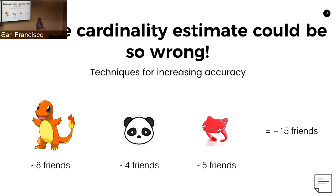Another possibility is to split them up and have different sets of friends play different vending machines, then average out the probabilities. If you evenly distribute friends over three different vending machines, you can take the average of what you'd estimate from each. So playing the Pokémon machine, you'd think I have about eight friends; four friends playing the sticker machine; five friends getting plastic rings. That's an average of five friends per machine, and multiplying by the number of streams — 15 friends total.